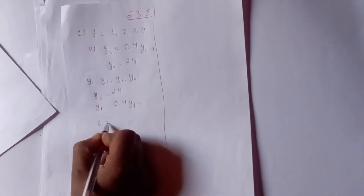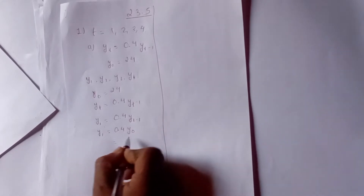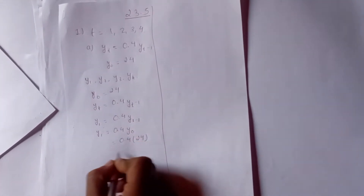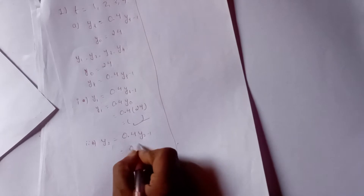yt equals 0.4 times y of t minus 1. So y1 equals 0.4 times y of 0 equals 0.4 times 24, which gives us 9.6. Then y2 equals 0.4 times y of 1.